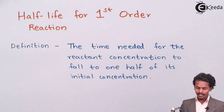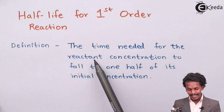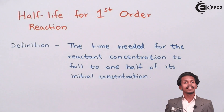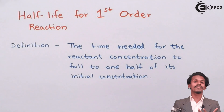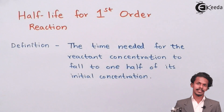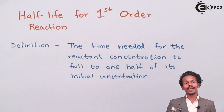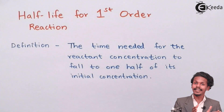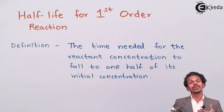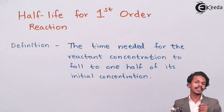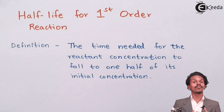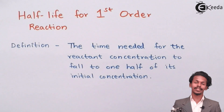So let us see the definition. According to the definition, half life is the time needed for the reactant concentration to fall to one half of its initial concentration. For example, if the initial concentration of a reactant is 100 moles per dm³, then the time required to convert it to its half — that is 50 moles per dm³ — is known as half life. Half life for every reactant can be different.